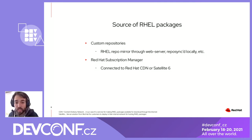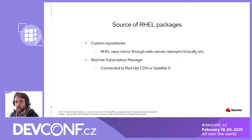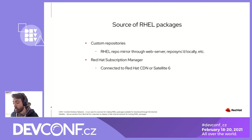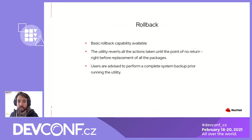That is the more difficult approach, but the easier one is to use the Red Hat subscription manager, which we'll be using today in our workshop. Through the subscription manager, you can connect by default to the Red Hat CDN, or for companies who have a larger set of machines to manage, they usually use Red Hat Satellite 6 server — and that's also a possibility for the conversion.